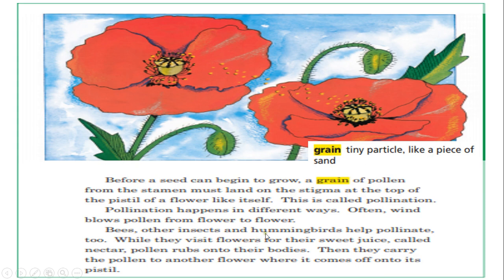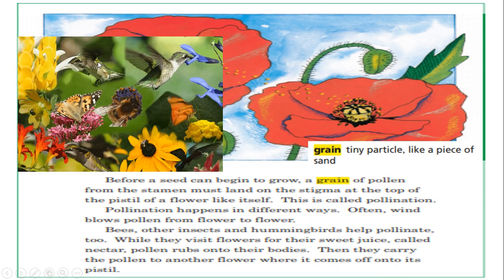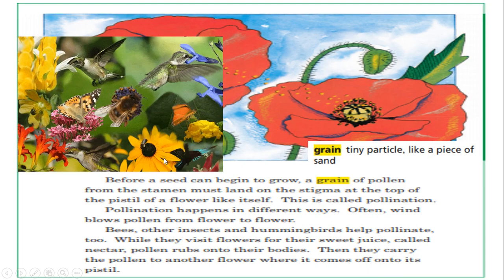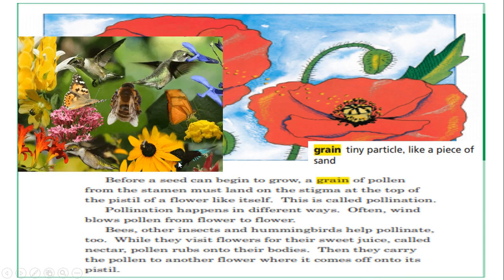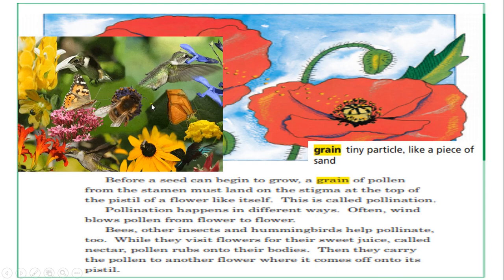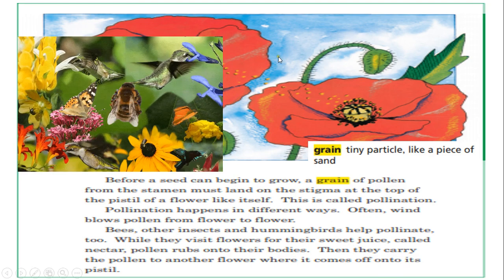Bees, other insects, and hummingbirds help pollinate too. While they visit flowers for their sweet juice called nectar, pollen drops onto their bodies. Then they carry the pollen to another flower, where it comes off onto its pistil. So over here we have some hummingbirds, a bee, butterfly, and other insects. All of them try to reach the nectar of the flower. The pollen gets stuck to their body, and once they travel to another flower to get more nectar, the pollen comes off at the pistil of the next flower.